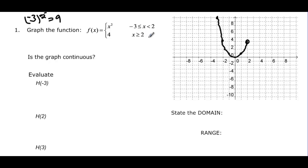When x is greater than or equal to 2, the function equals 4. So the second piece starts at (2, 4) as a closed point and continues as a horizontal line forever. Is the graph continuous? Yes — the first piece had an open circle at (2, 4), but the second piece closes that point, so there's no gap. It is a continuous graph.